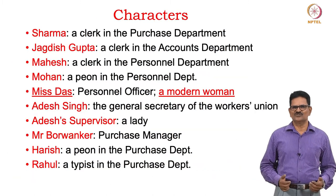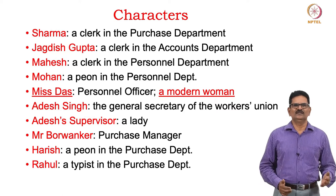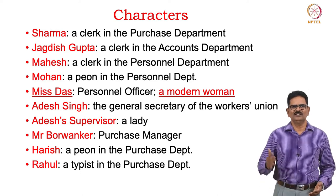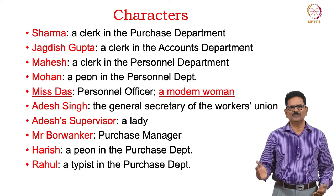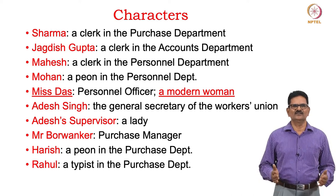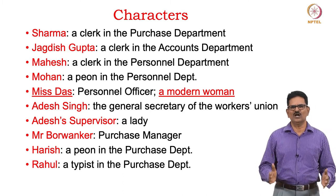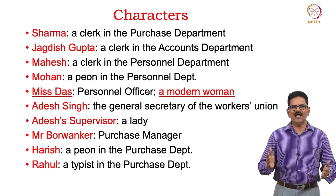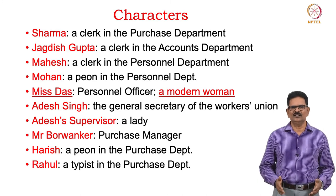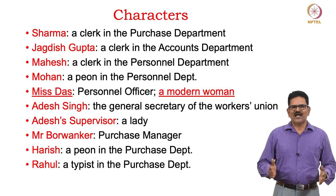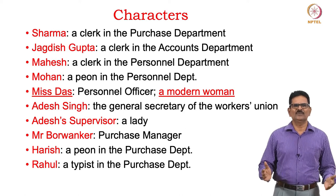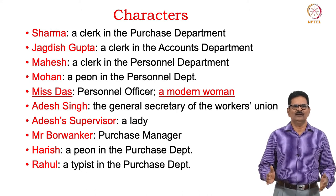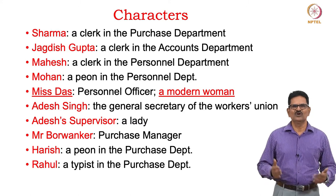The characters in the short story include Sharma, the main character and a clerk in the purchase department; his friend Jagdish Gupta, a clerk in the accounts department; Mahesh and Mohan, clerks in the personal department; Miss Das, the personal officer presented as a modern woman who solves problems; Mr. Adesh Singh, general secretary of the workers union; a lady supervisor for Adesh Singh; Mr. Burwankar, the manager for Sharma; and Harish, a peon, and Rahul, a typist, both in the purchase department.